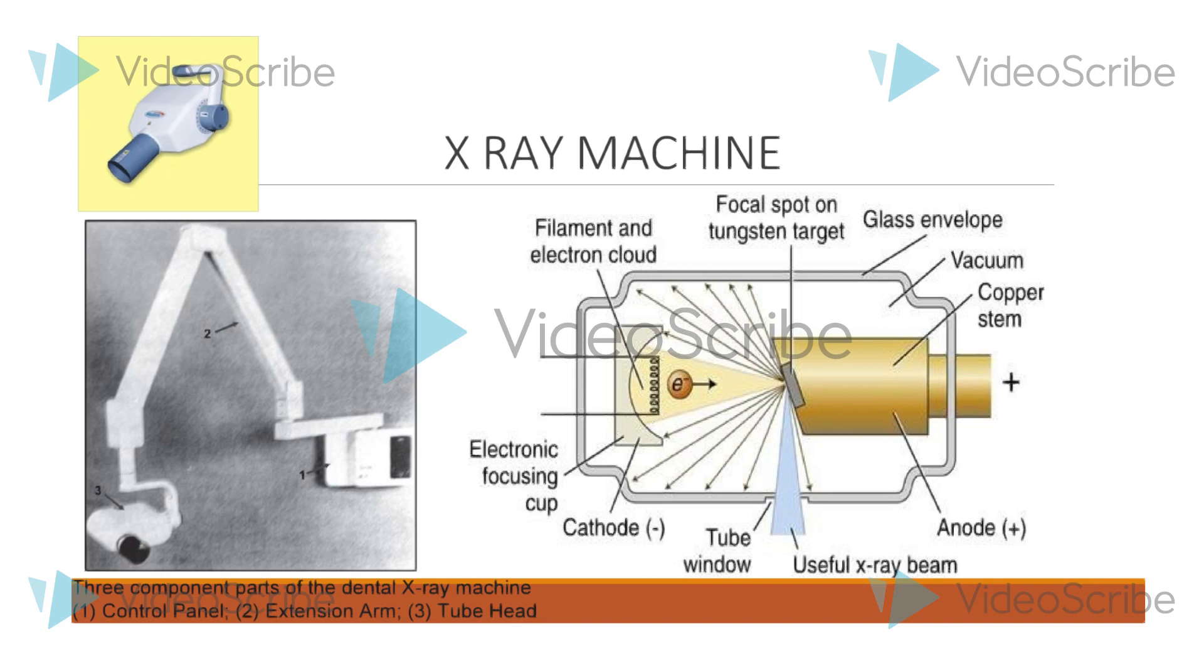The electrons stream from the cathode to the target on the anode where they produce X-rays. The cathode consists of filament and a focusing cup.